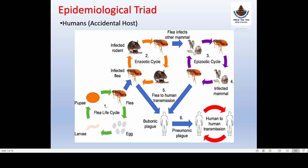The flea also infects other mammals. When it infects other mammals, it becomes an epizootic cycle — meaning it is not only limited to the rodent but spreads to other mammals, covering a larger area. So the enzootic cycle is limited to rodents and fleas, while the epizootic cycle spreads to other mammals.